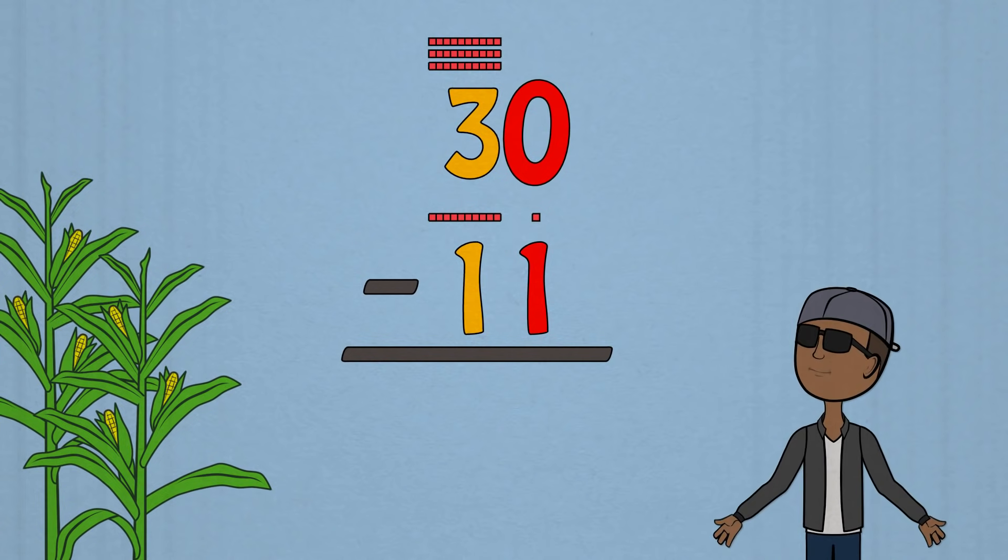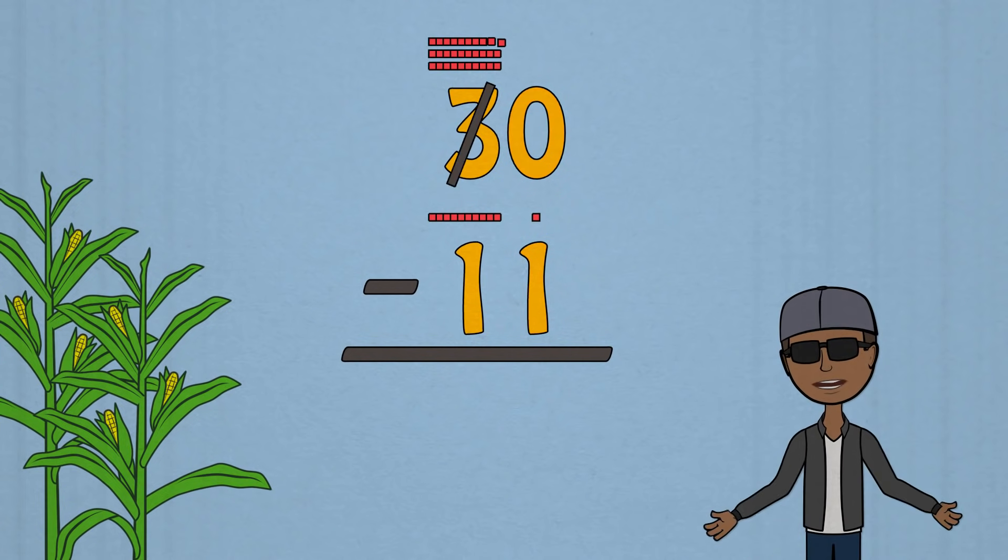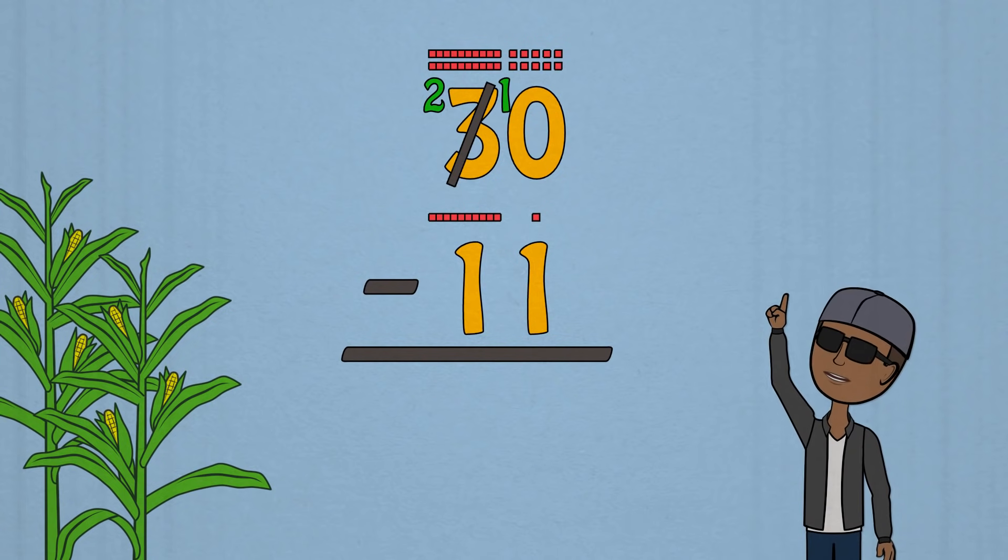So we regroup a 10 in the tens and ones. When the top number is smaller in subtraction, I say zero minus one can't be done because the top number is smaller than the bottom one. So we regroup a 10 in the tens and ones when the top number is smaller in subtraction.